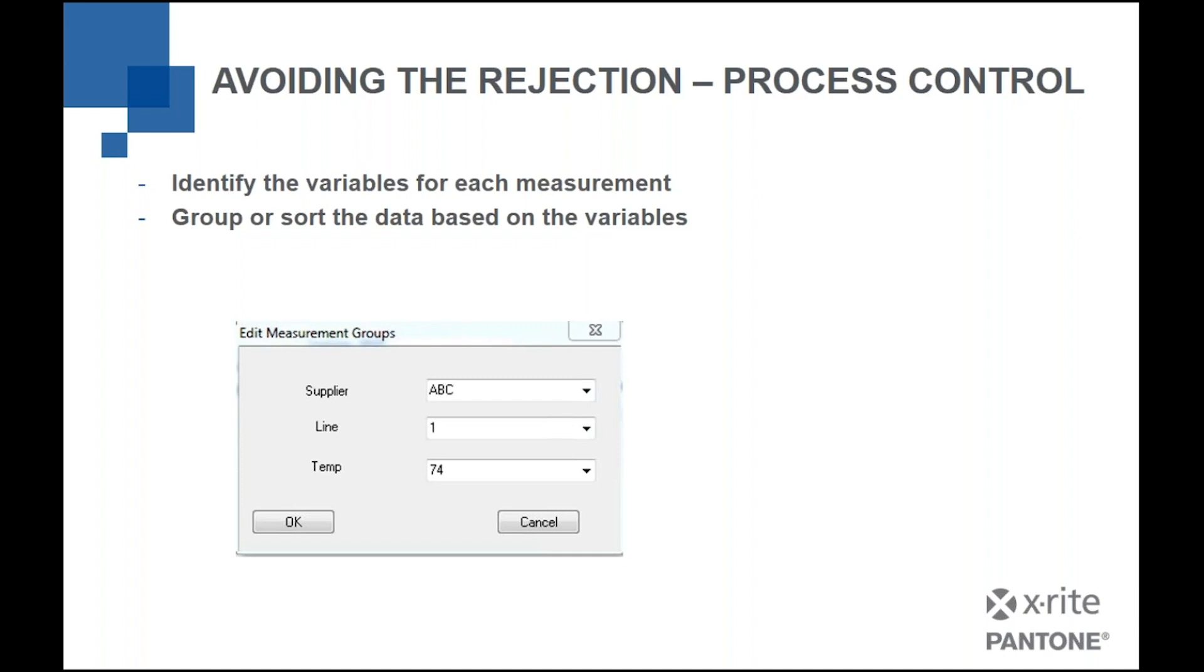It's about identifying which process variation items might be the most critical for you. Is it what piece of machinery it was manufactured on? Is it, do you have multiple suppliers? Is it different substrates? Is it different temperatures? Is it different dwell times?